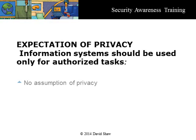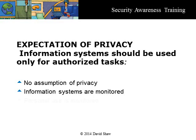You should have no expectation of privacy on corporate information systems. Information systems and assets should only be accessed and used to perform authorized tasks. You should be aware that authorized personnel usually monitor activity on information systems. There is no assumption of privacy, including during personal use. Therefore, you should be aware that internet banking or any other personal use is not excluded from monitoring.